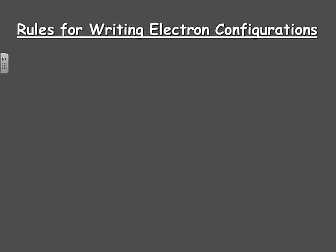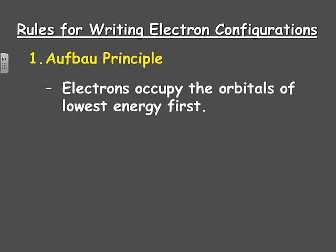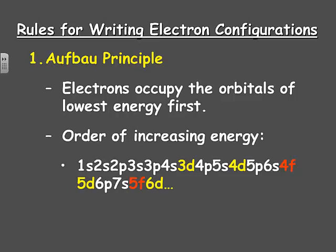We need to learn some rules for writing these electron configurations. The first rule is the Aufbau principle. What it tells us is that electrons occupy the orbitals of lowest energy first, so electrons will go into a 1S level before a 2S level, and into a 2S before a 2P, since the 2S level is slightly lower in energy than the 2P. The order of increasing energy is shown below. You may notice that some levels shown seem to be out of order — the 4S level actually has less energy than the 3D, so it comes before it.